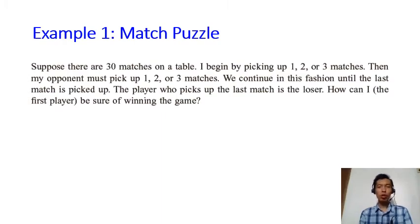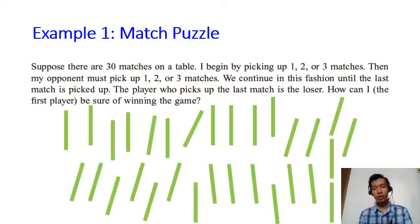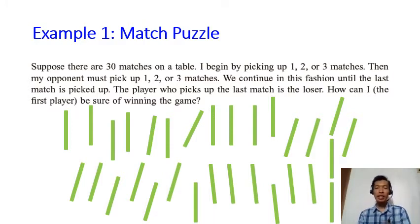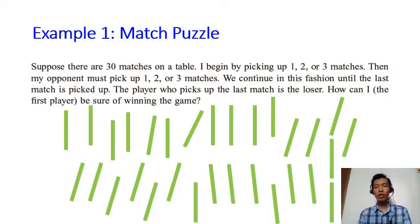The first example is called the match puzzle. Suppose there are 30 matches on a table. I begin by picking up one, two, or three matches. Then it's my opponent's turn to pick up again — either one, two, or three matches. We continue until the last match is picked up. The player who picks up the very last match is the loser. The question is: how can I, the first player, be sure of winning the game?